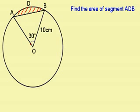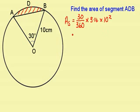I'm going to start with the area of the sector. This is 30 over 360 multiplied by 3.14 times 10 squared. Typing this into my calculator gives me the answer 26.17.